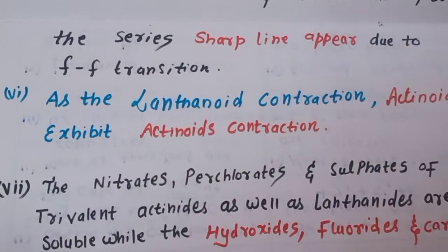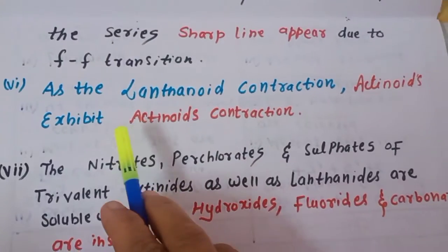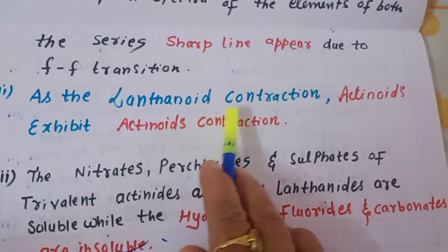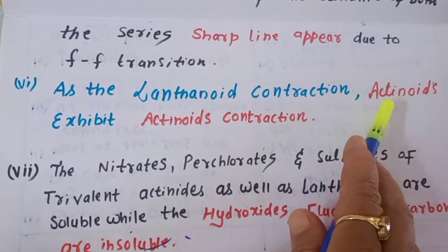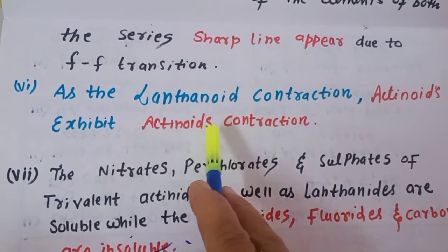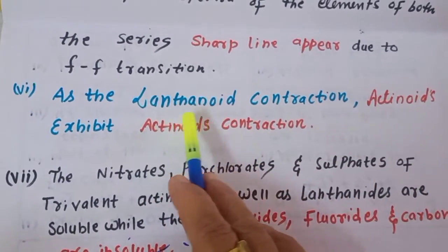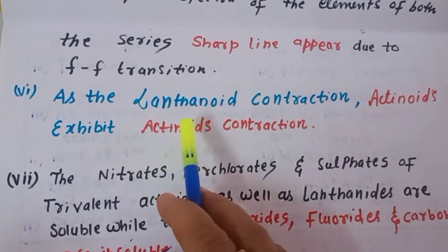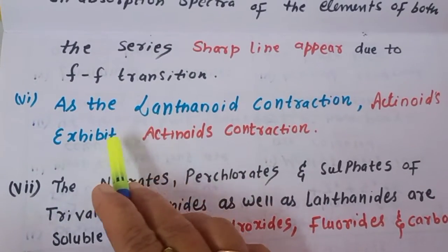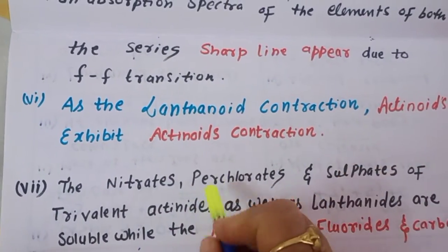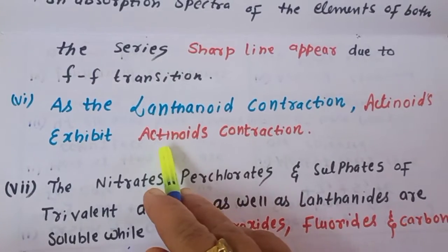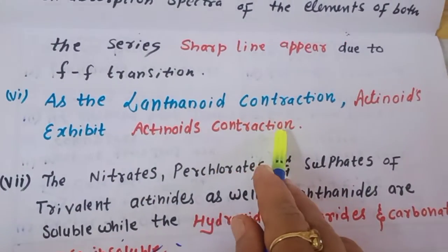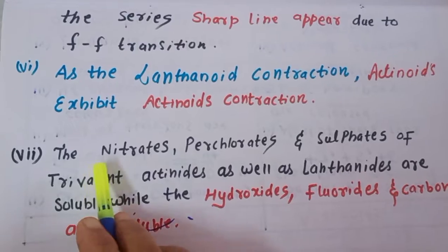Fifth point: just as lanthanides show lanthanide contraction, actinides show actinide contraction. Lanthanide contraction refers to the steady decrease in atomic size moving from left to right across the lanthanide series. Similarly, atomic size also decreases progressively across the actinide series.